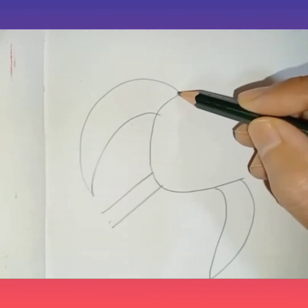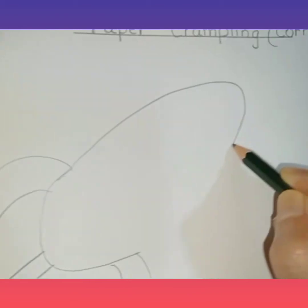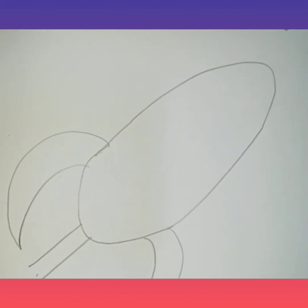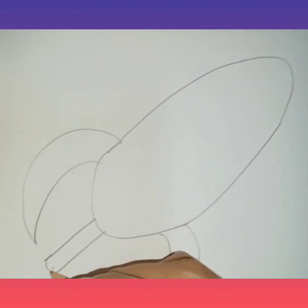Now you will start from here and make a curve like this. Need not be perfect but you can try. Right? And here you will just join it like this. So your corn is ready. The drawing is ready. Right?